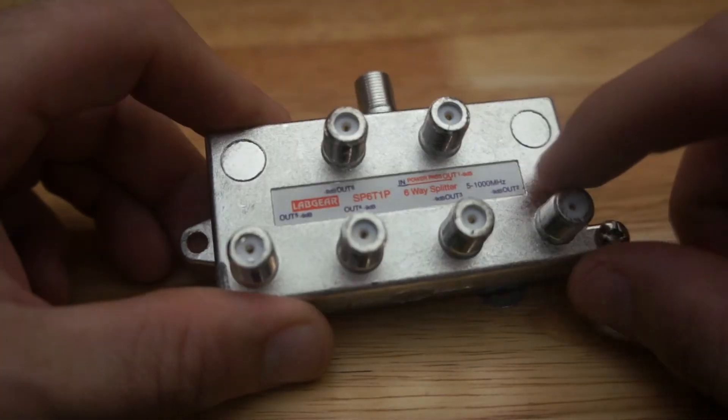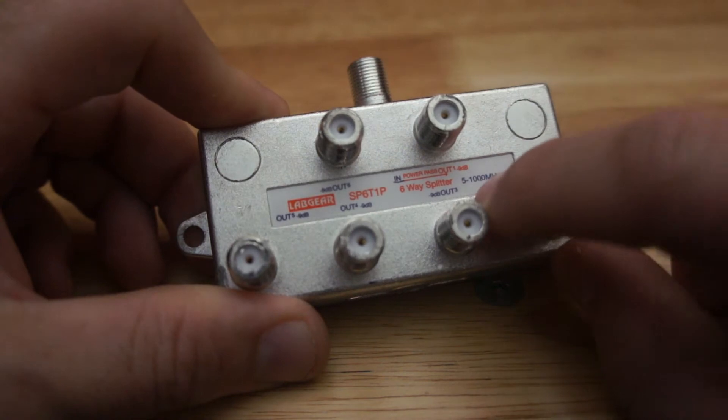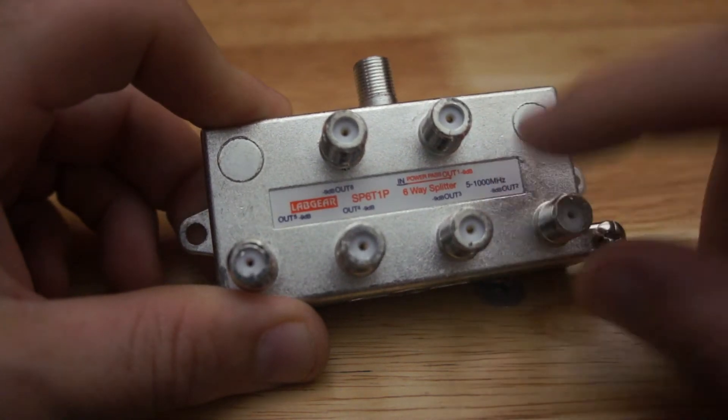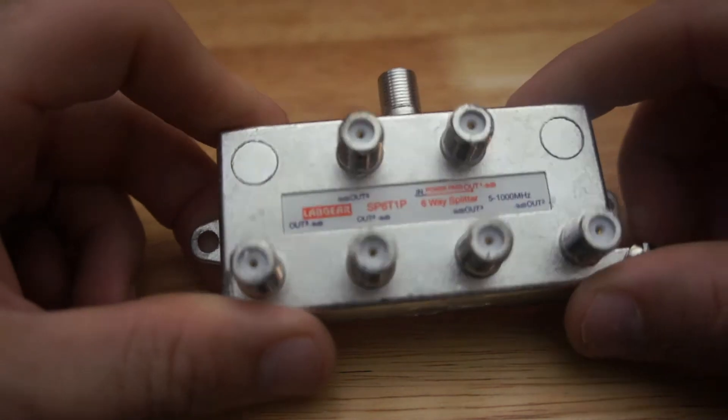So, what else do you need to know? Any splitter will have a frequency range. This one's 5 to 1000, meaning it's a basic free-to-air splitter.